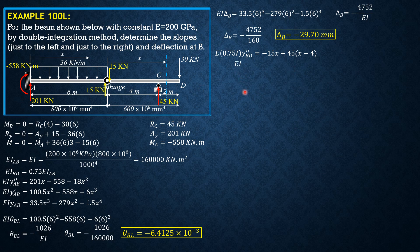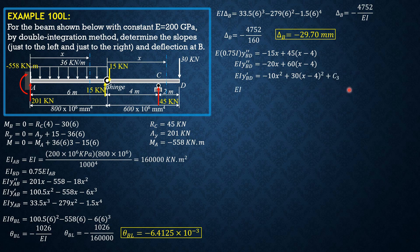Dividing everything by 0.75: EI y'' BD equals negative 20x plus 60 times (x minus 4). Integrating once: EI y' BD equals negative 10x squared plus 30 times (x minus 4) squared plus C3. Integrating again: EI y_BD equals negative 10/3 x cubed plus 10 times (x minus 4) cubed plus C3 x plus C4.